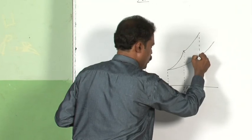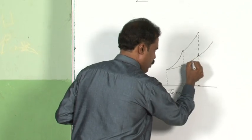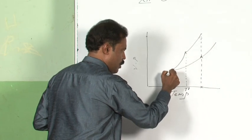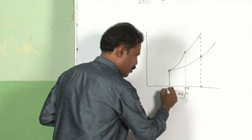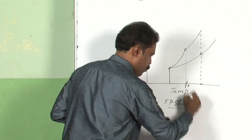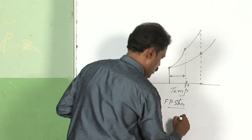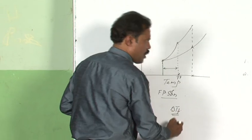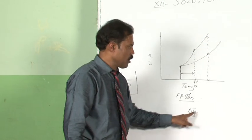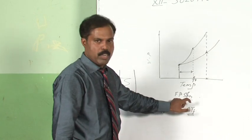In the solution, the vapor pressure is already less than the actual vapor pressure of the solvent. As you reduce the temperature, the vapor pressure keeps decreasing. At a lower point, freezing takes place — that is the freezing point of the solution. This difference between the freezing point of the solvent and the freezing point of the solution gives you the depression in freezing point, delta Tf. Depression in freezing point can be used to find out molecular weight of a given substance, because this again is a colligative property.